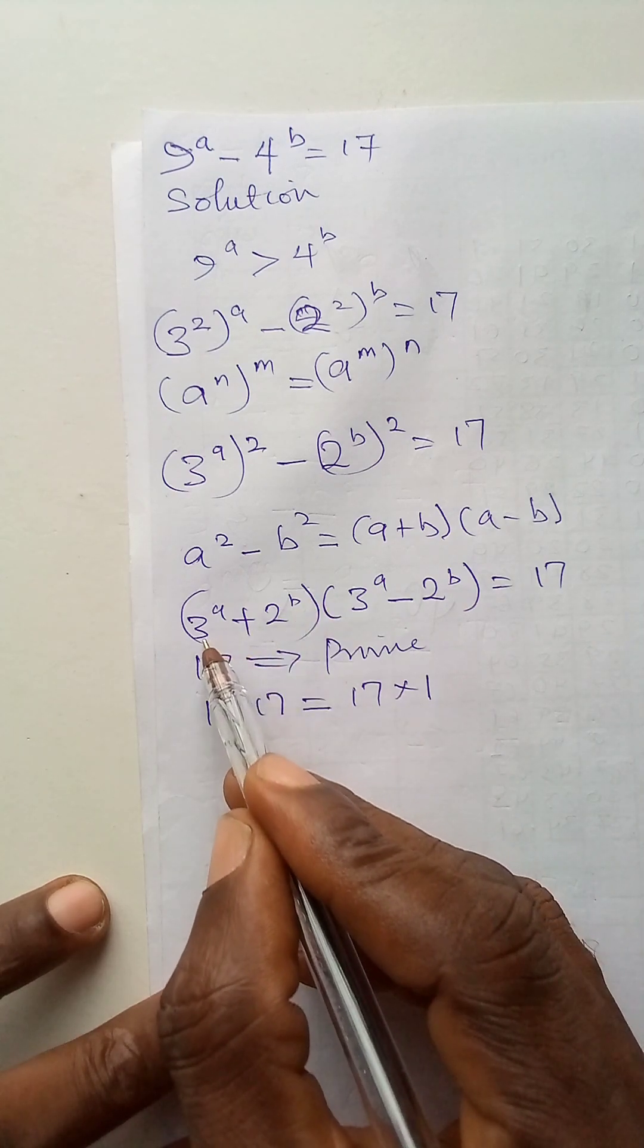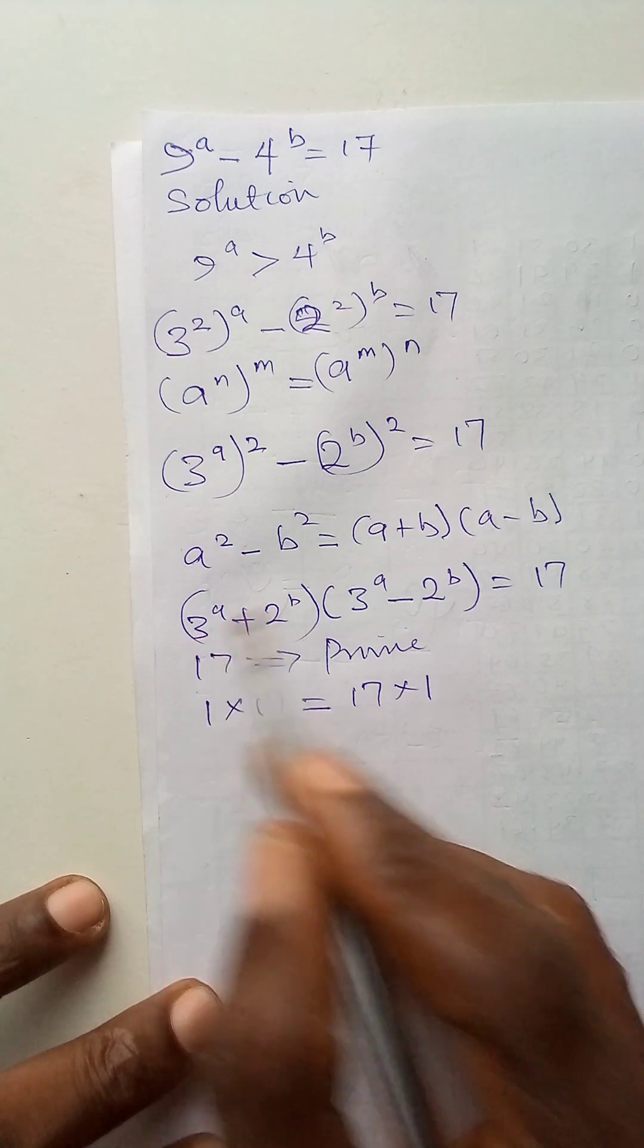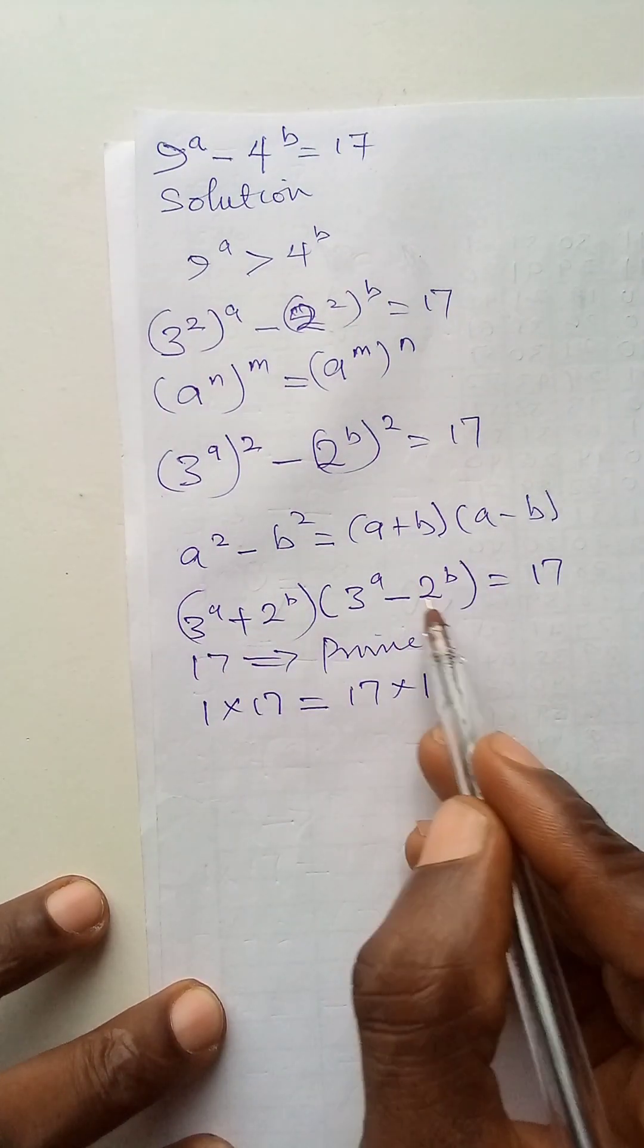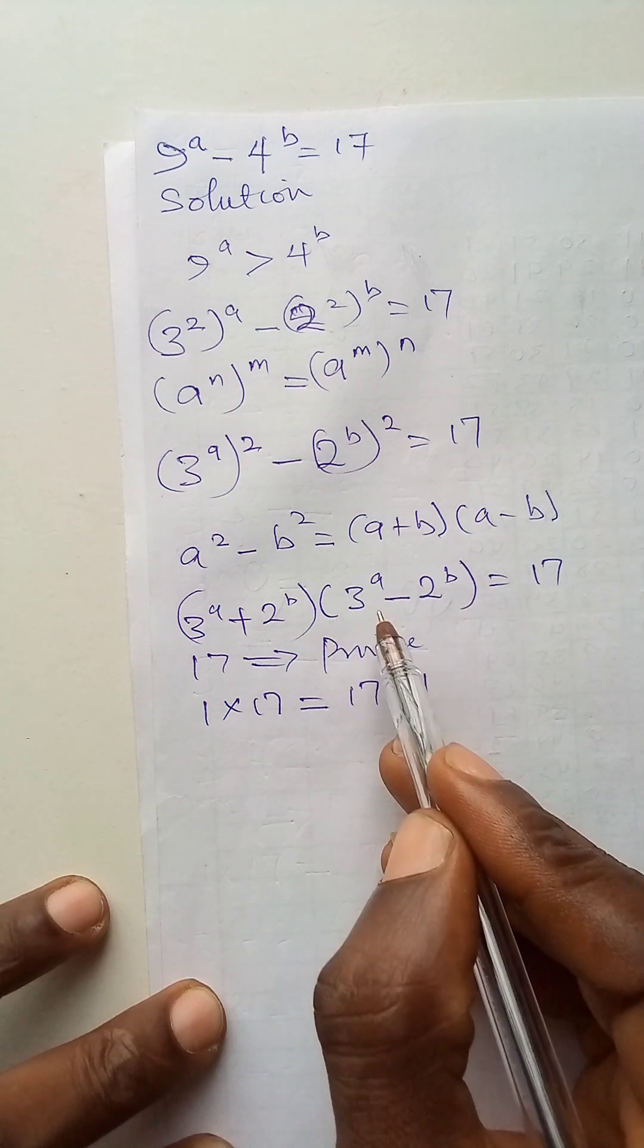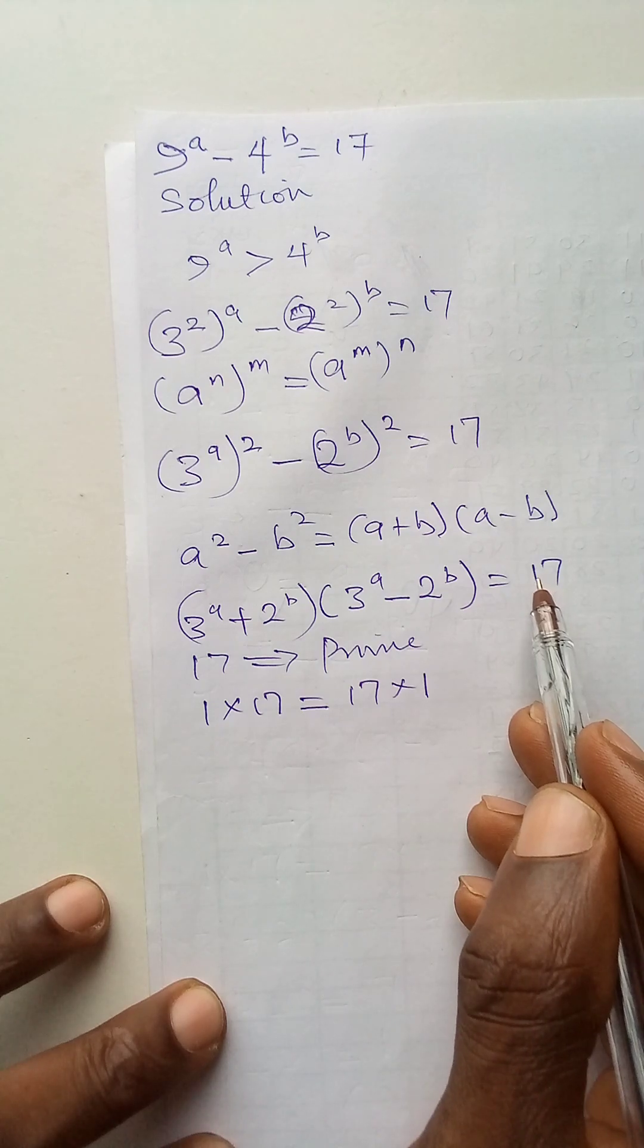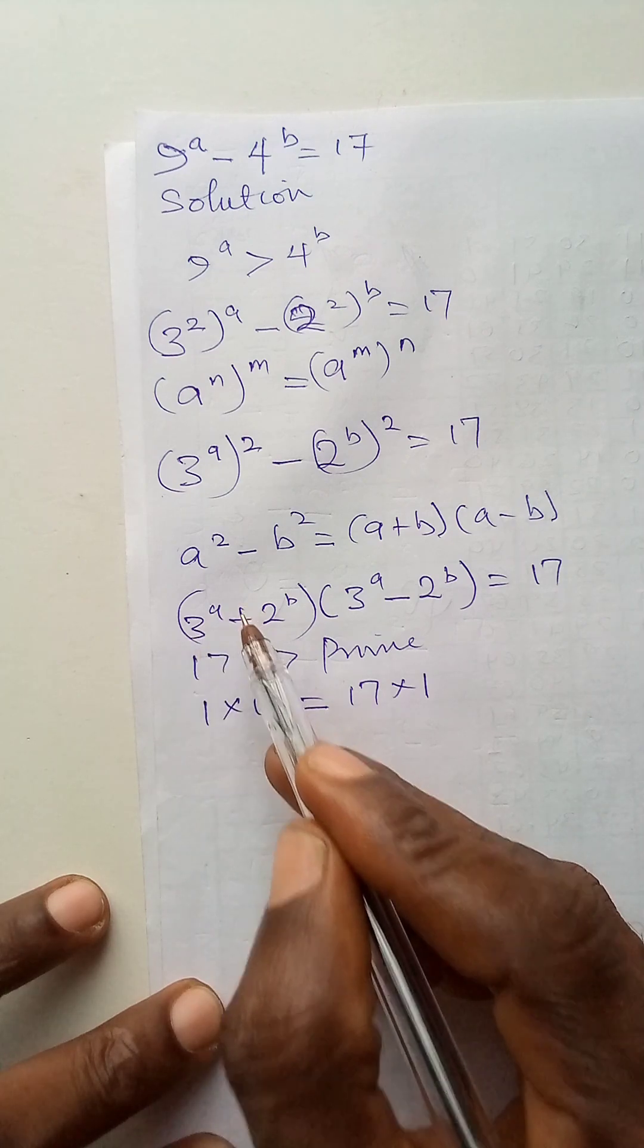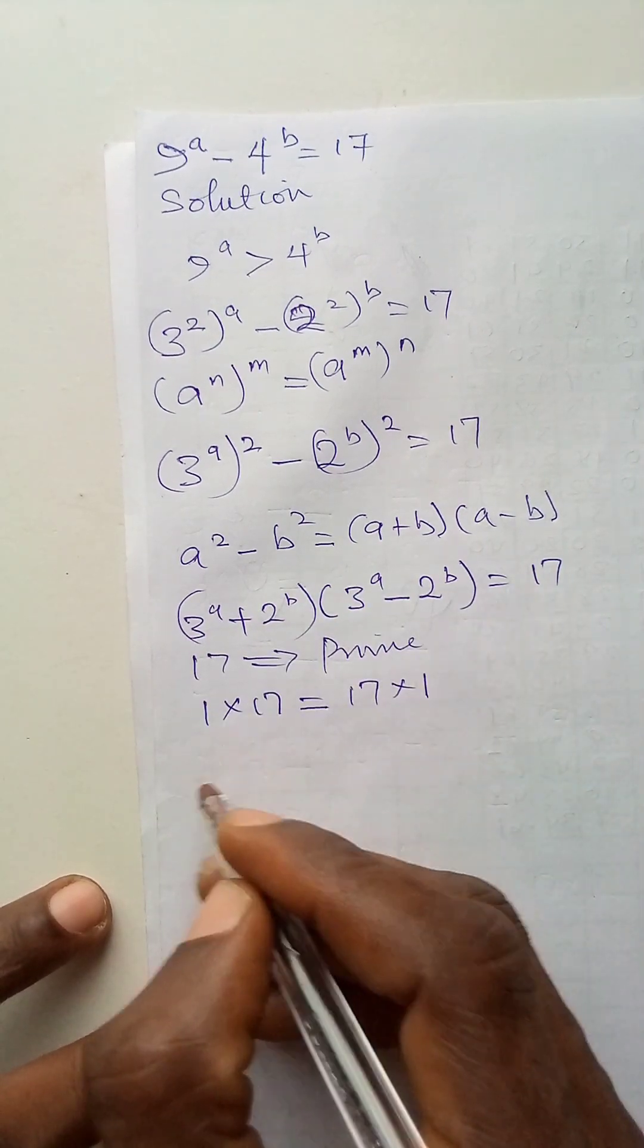Also, if I add an even number to an odd number, I will have an odd number. And if I subtract an even number from an odd number, I will also have an odd number. 3 to power anything is always odd and 2 to power any number is always even.